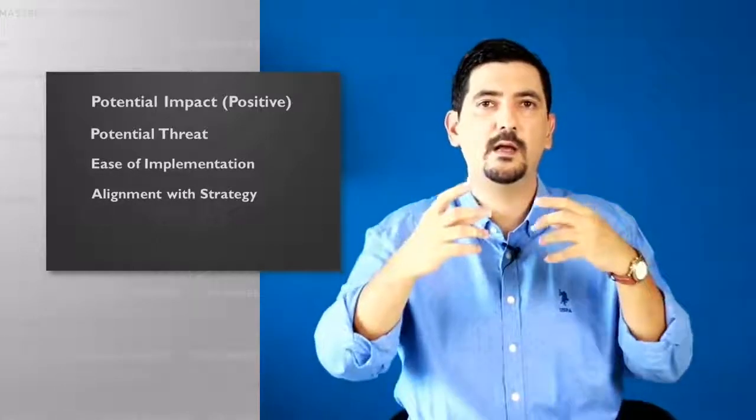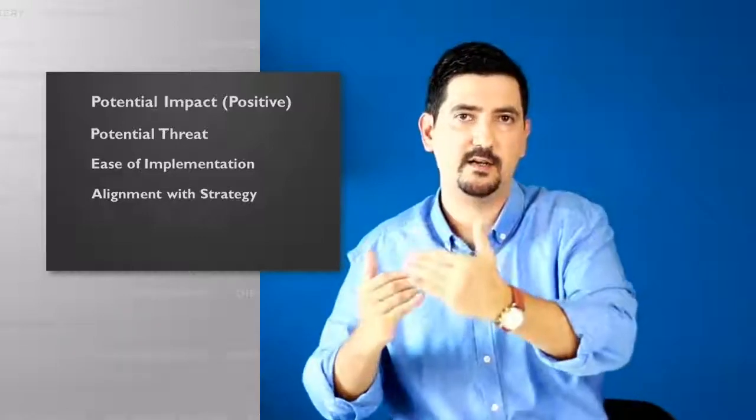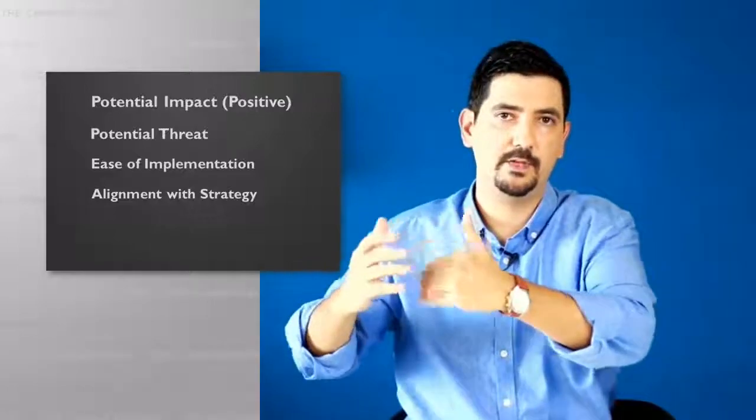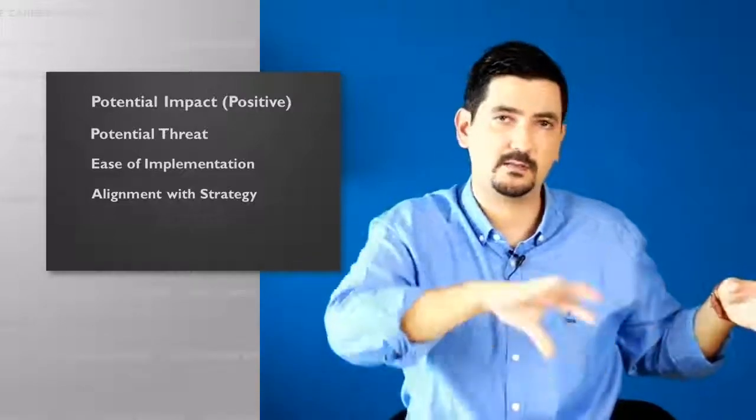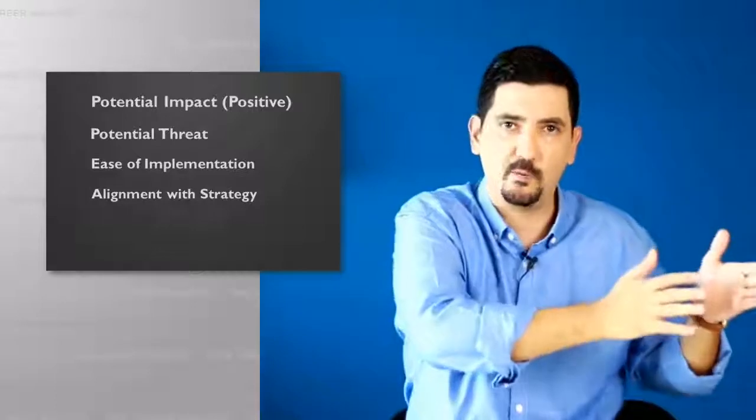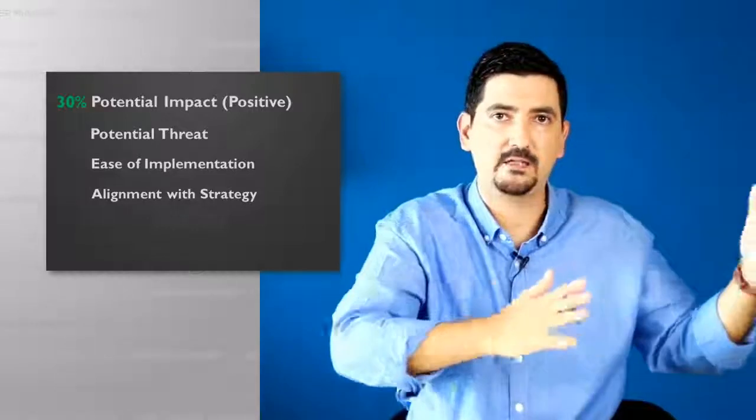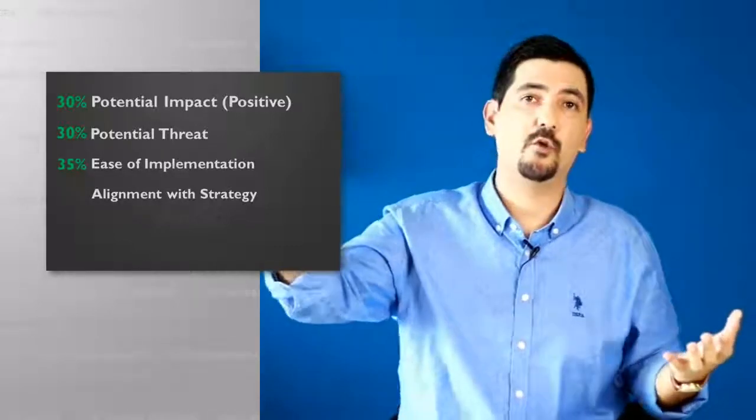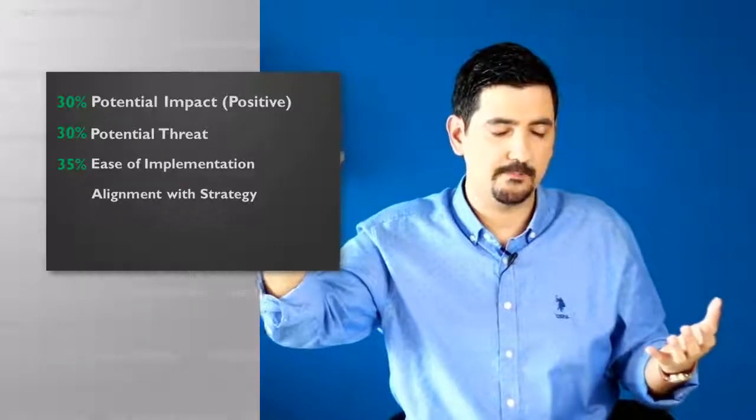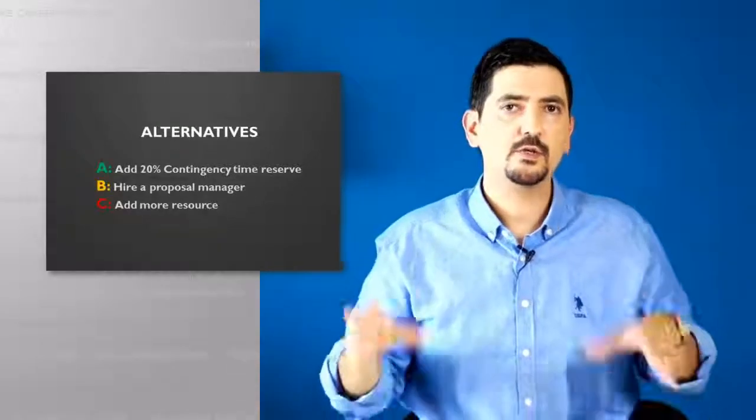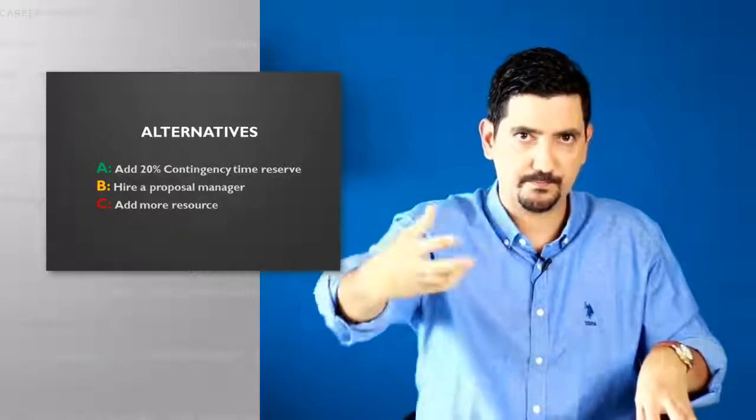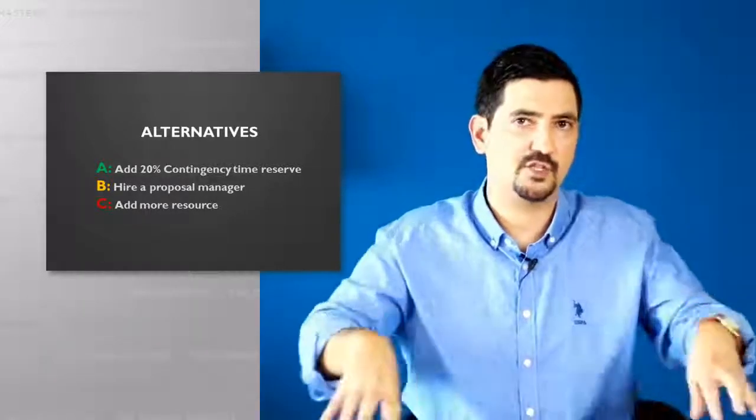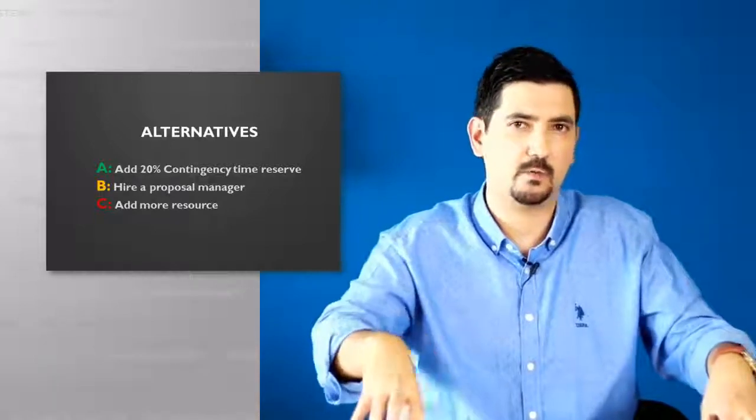And just a side note here, you may also assign weight scores to each criterion. For example, you may want to give more weight towards ease of implementation than alignment with strategy. It depends on your needs. So, it would be like 30% weight for impact, 30% weight for potential threats, 35% weight for ease of implementation, and 5% weight for alignment with strategy. So, from the potential future impact perspective, I see no difference between the alternatives. They will all get the job done. Not necessarily better or worse, probably. But from a potential threat perspective, hiring a new person is costly.